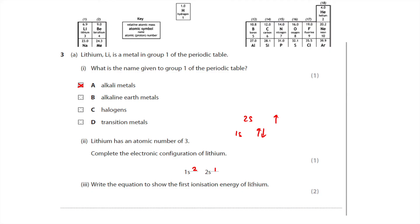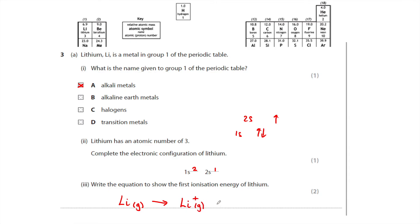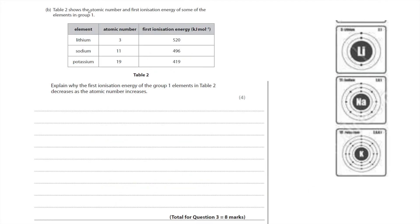Write the equation to show the first ionization energy of lithium. The first ionization energy is the energy needed to remove one electron per atom of lithium in the gaseous state from one mole of atoms. Starting with a lithium atom in the gaseous state, Li(g), we remove one electron to form the lithium ion Li⁺(g), and we show the electron with its symbol: Li(g) → Li⁺(g) + e⁻.